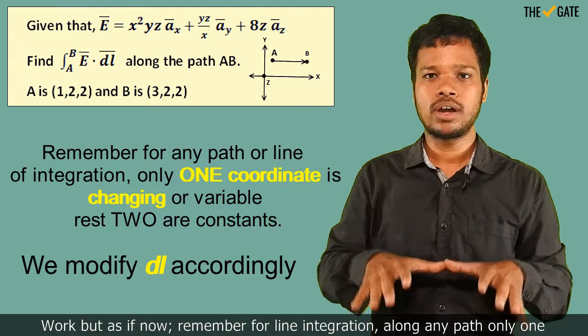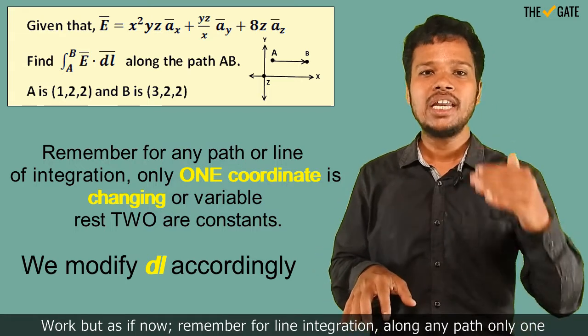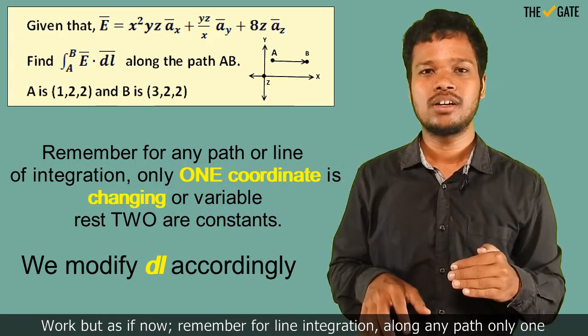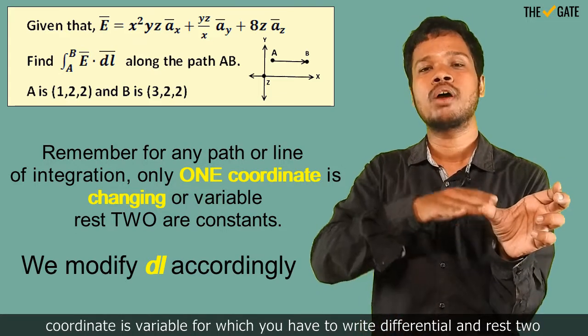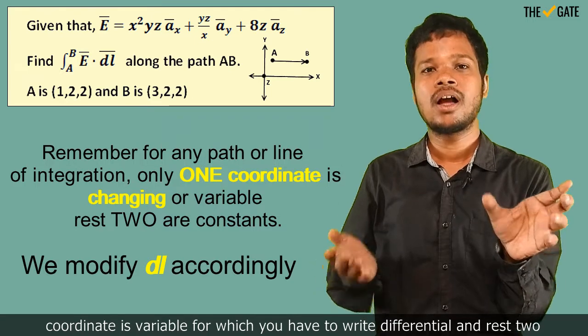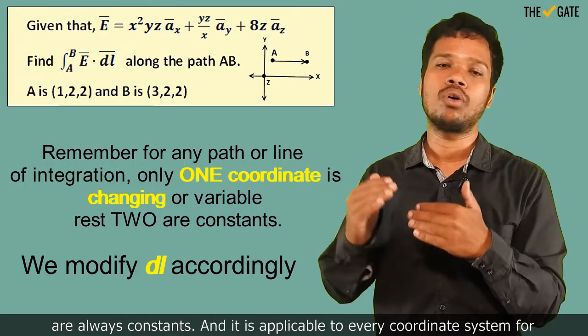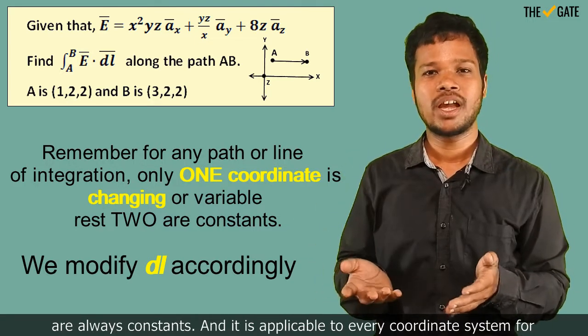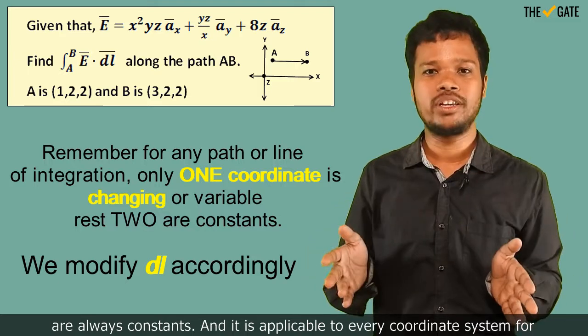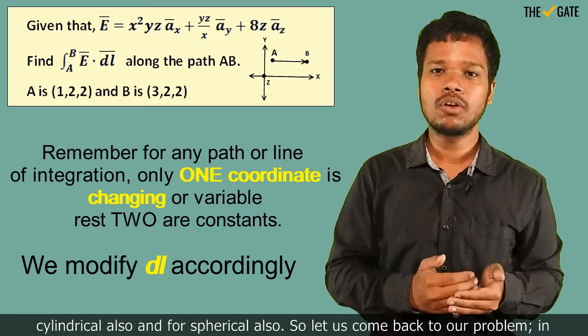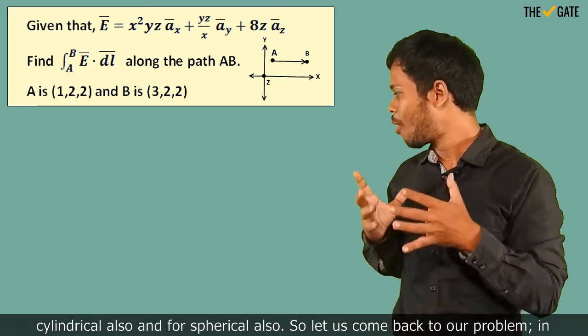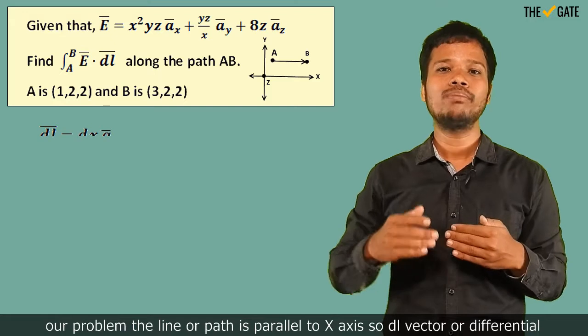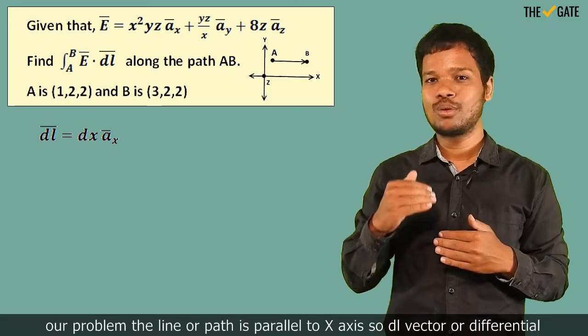But as of now, remember: for line integration along any path, only one coordinate is variable for which you have to write the differential, and the rest two are always constants. And it is applicable to every coordinate system—for cylindrical also and for spherical also. So let us come back to our problem. In our problem, the line or path is parallel to the x-axis.